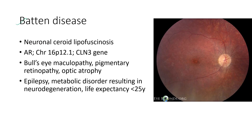Next is Batten disease, also known as neuronal ceroid lipofuscinosis. It is an autosomal recessive condition. The ocular features include bullseye maculopathy, pigmented retinopathy, and optic atrophy. The systemic features include epilepsy and metabolic disorder resulting in neurodegeneration. The life expectancy of a patient with Batten disease is less than 25 years.